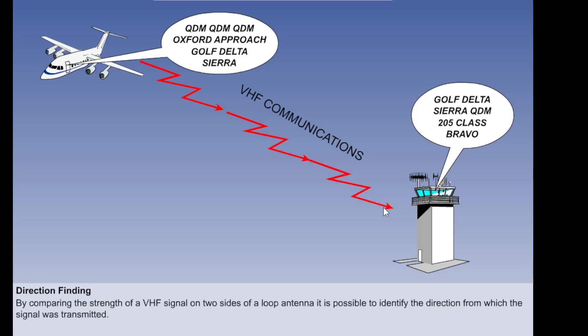This direction finding system called VHF direction finder or VDF is available in many airfields and a pilot can ask a ground station to give him a bearing to fly to the station. The ground station uses this loop antenna theory to locate the aircraft by taking a bearing on his VHF transmissions. UHF transmissions are also used, but only by the military.